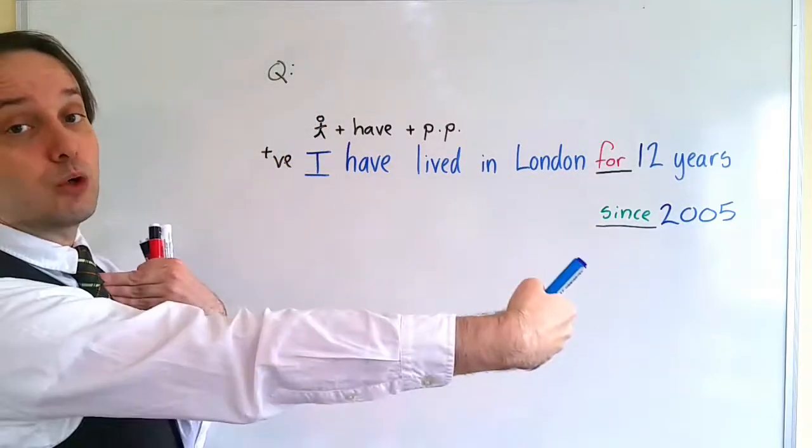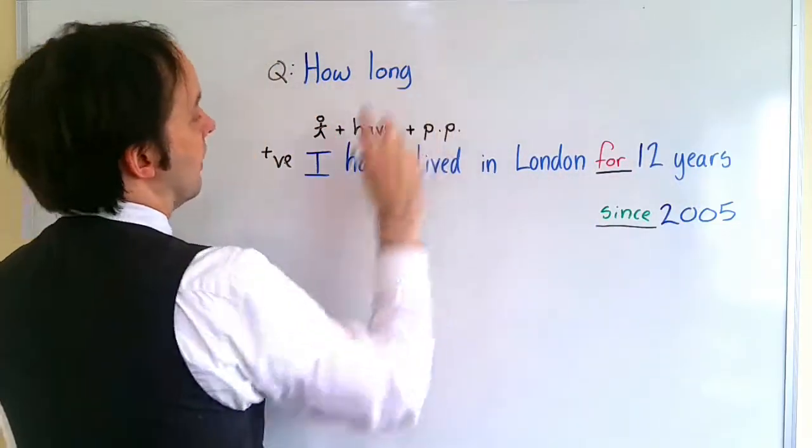So we're asking an open question about the time, so it's how long. How long, then the change, then the verb, in LDN, London. So now we have an open question. How long have you lived in London? I've lived in London for 12 years. I've lived in London since 2005.